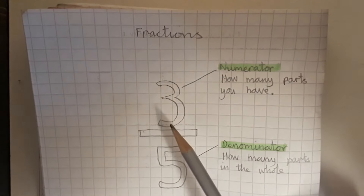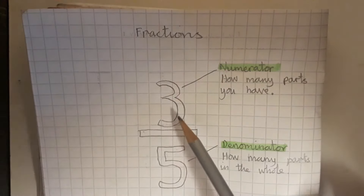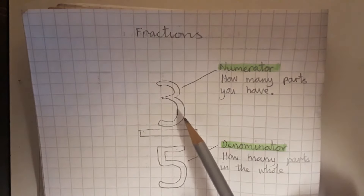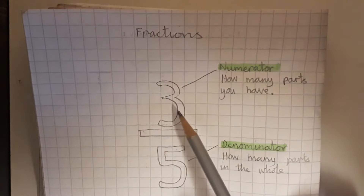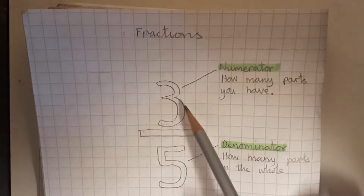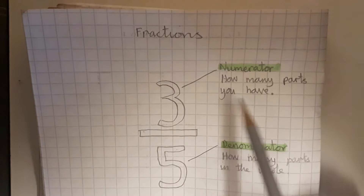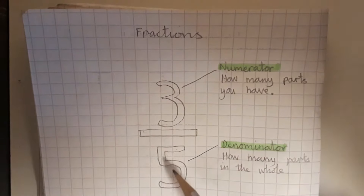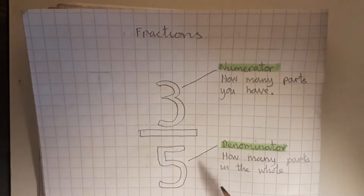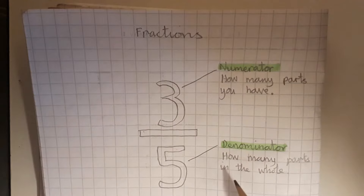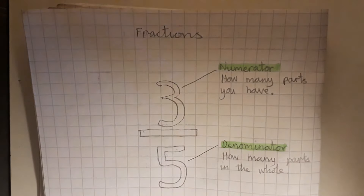Here we can see the fraction three-fifths. The digit on the top is the numerator, which tells you how many parts you have. The digit at the bottom is called the denominator and that tells you how many parts are in the whole.